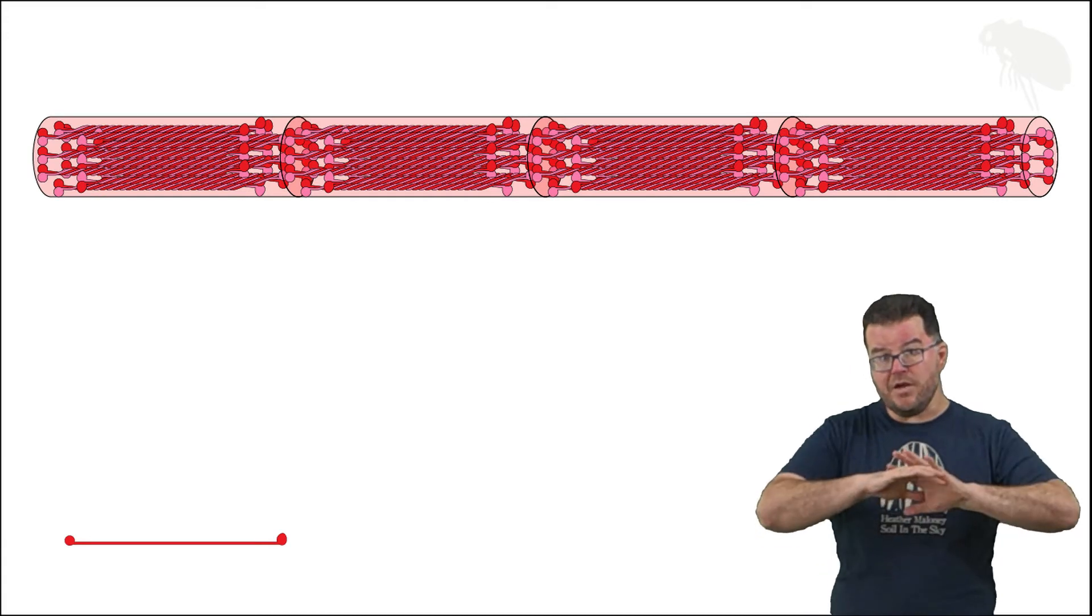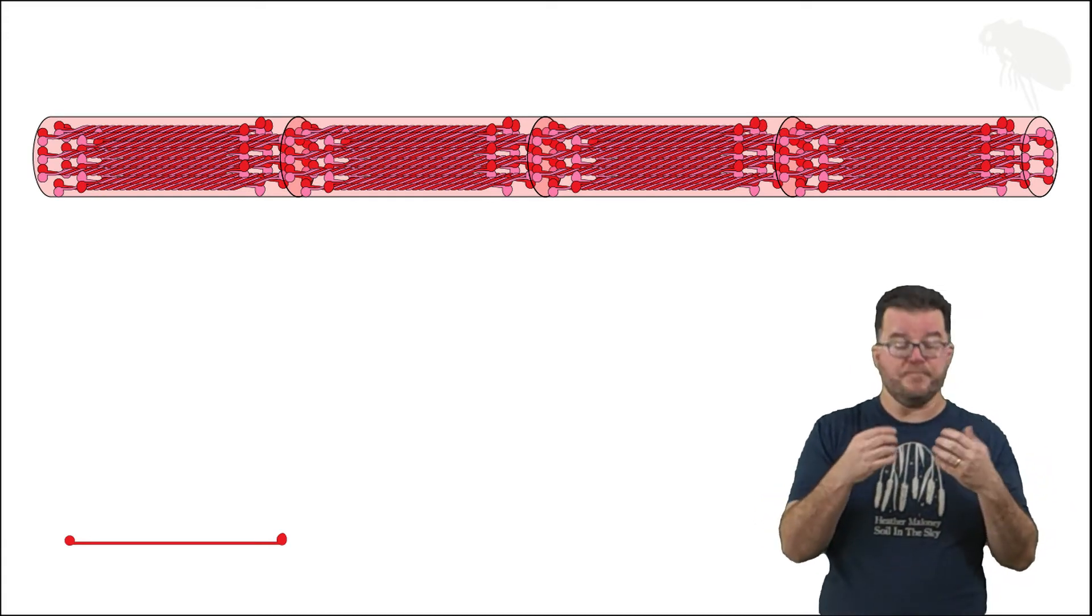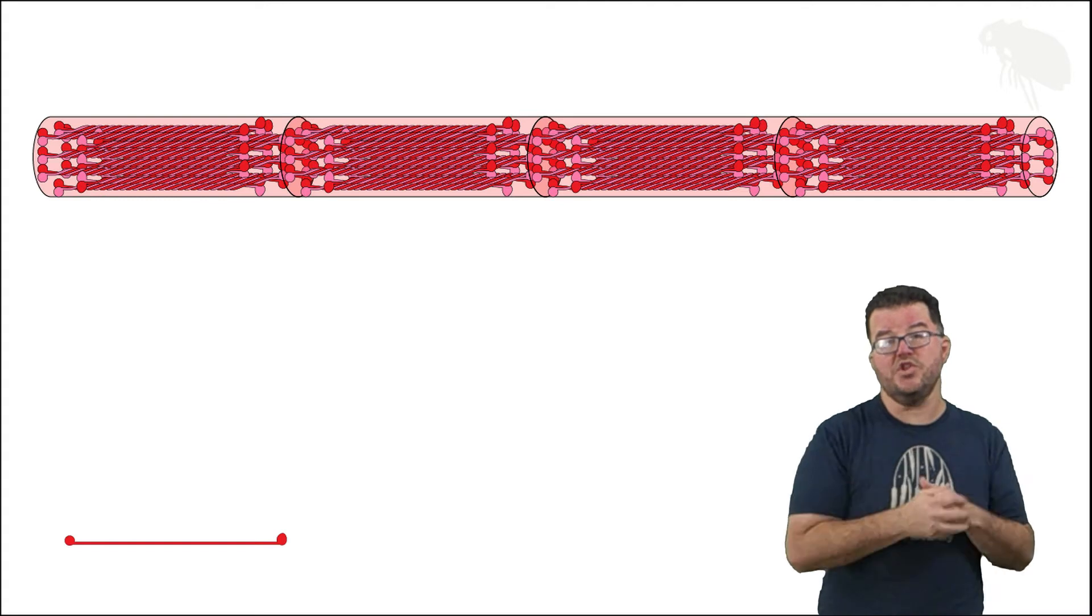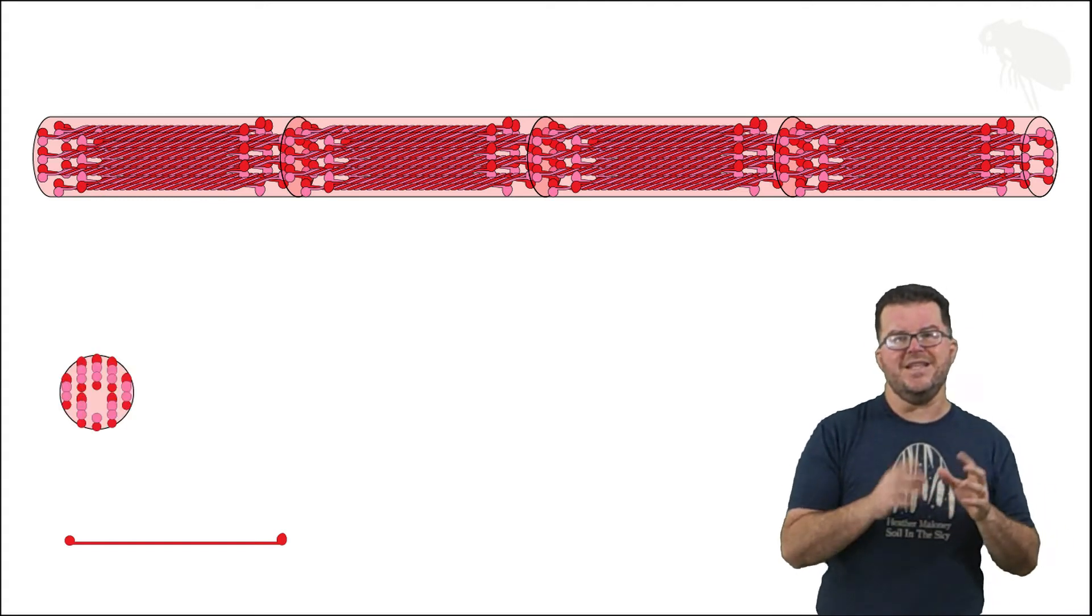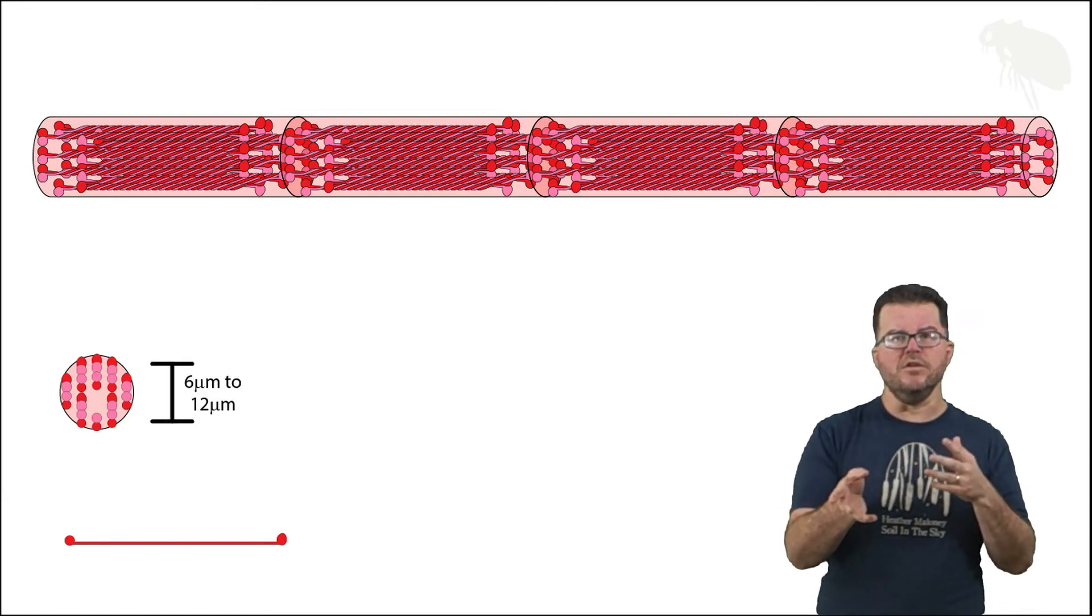Now like with all of the cytoskeletal elements, we want to talk about their relative size. So from a cross-section view you can see that intermediate filaments range from about six micrometers to around 12 micrometers.